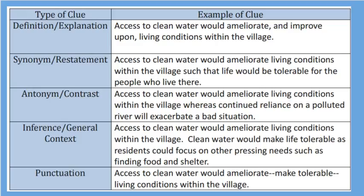In the next type of clue, we have synonym and restatement. The sentence would say: 'Access to clean water would ameliorate living conditions within the village, such that life would be tolerable for the people who live there.' They restated what 'ameliorate' means. Are you figuring out what the word ameliorate means with these different types of clues?